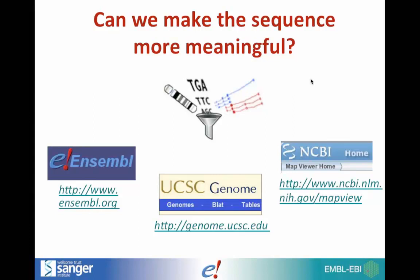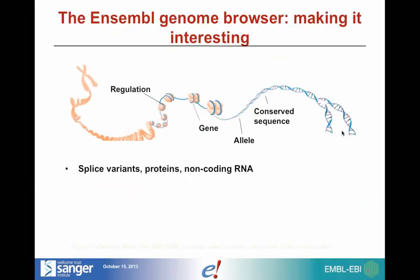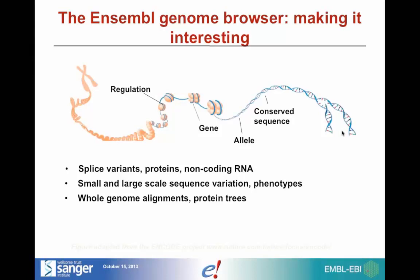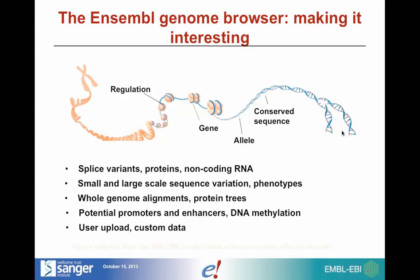What exactly do we have in Ensembl? If you go to a location on the genome, you can find many different types of data: splice variants, proteins, non-coding RNA, small and large-scale sequence variation, phenotypes associated with those variations and with genes. We can see whole genome alignments, protein trees to detect homologues, potential promoters and enhancers, DNA methylation — a lot of which for human and mouse comes from the ENCODE project, where we do an analysis on top of the ENCODE data.